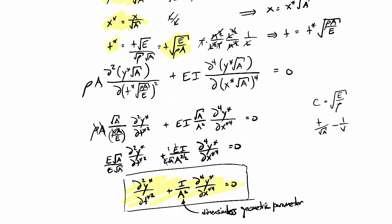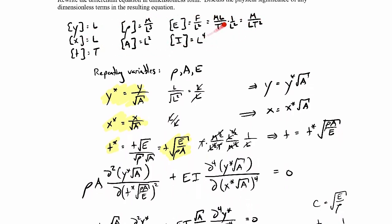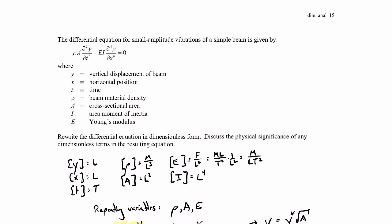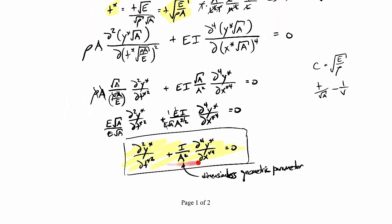In this course you wouldn't be expected to know that — I'm just giving it as extra bonus information. That's what that quantity represents: something related to the speed of wave propagation within the beam. The important thing to take from this example is the dimensional analysis approach: write out the dimensions of all variables, choose three repeating variables, make y, x, and t dimensionless using those quantities, plug them back into the differential equation, and simplify to get a dimensionless expression.